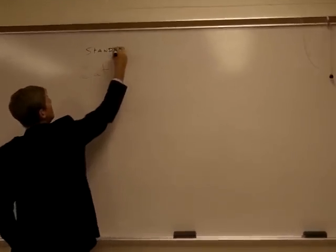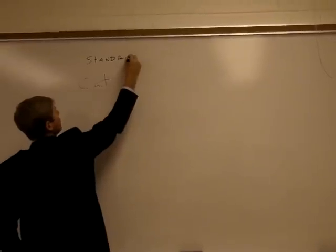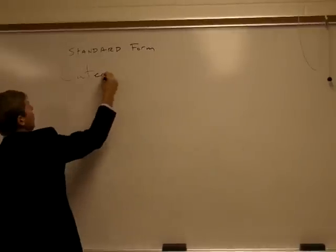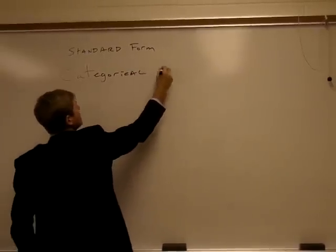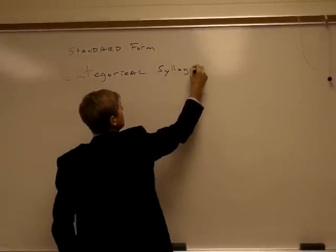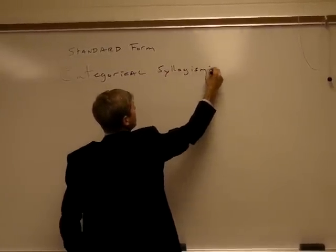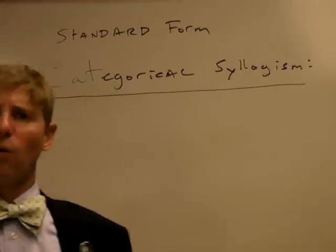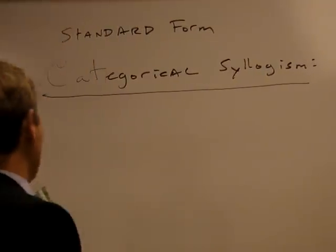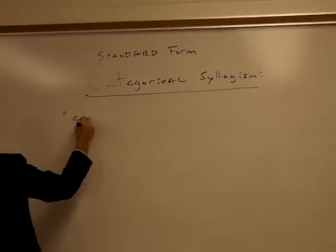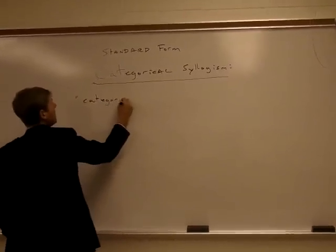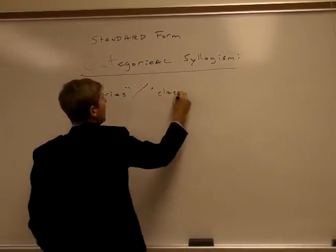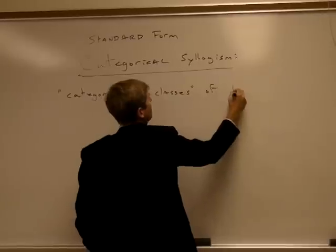I'm going to define briefly what a standard form categorical syllogism is. The main unit that we're working with in categorical syllogisms are what might be called categories, or if you prefer, classes of things.